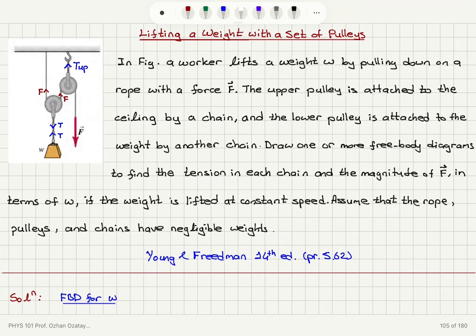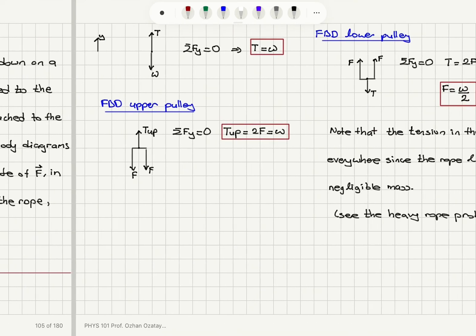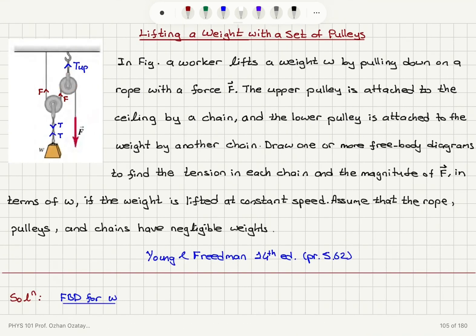So in order to find the tension on each chord, first we started with the free body diagram of W. We see that W is balanced by tension in the chain. So we can find the tension T to be equal to W. And this tension T is balanced by 2F in the lower pulley. So therefore, we find that 2F is equal to W or F is equal to W over 2. And when we look at the upper pulley...